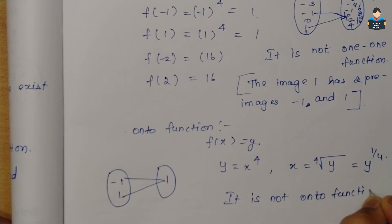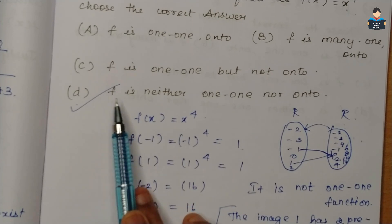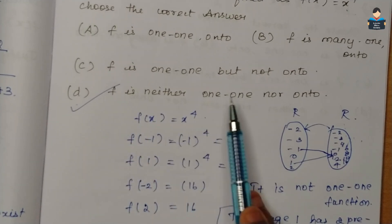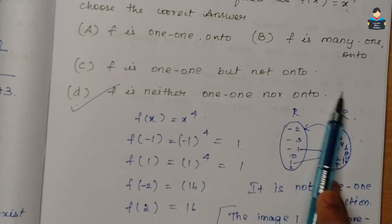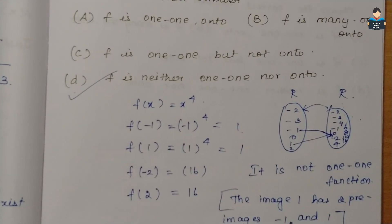So f is neither one-to-one nor onto. The answer is option D. Next is Question 12.